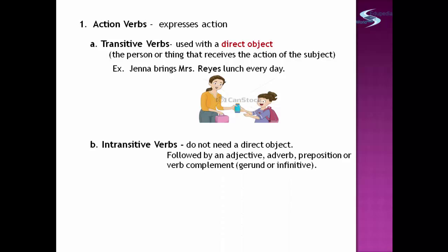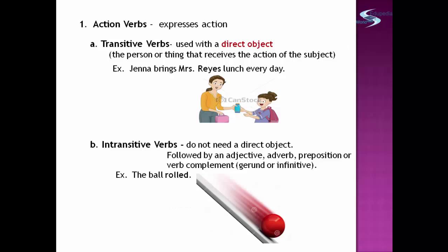The second subtype of action verbs is intransitive verbs. These do not need a direct object and are usually followed by an adjective, adverb, preposition, verb complement, or infinitive. For example: 'The ball rolled.' There is no receiver of the action, so 'rolled' is intransitive.